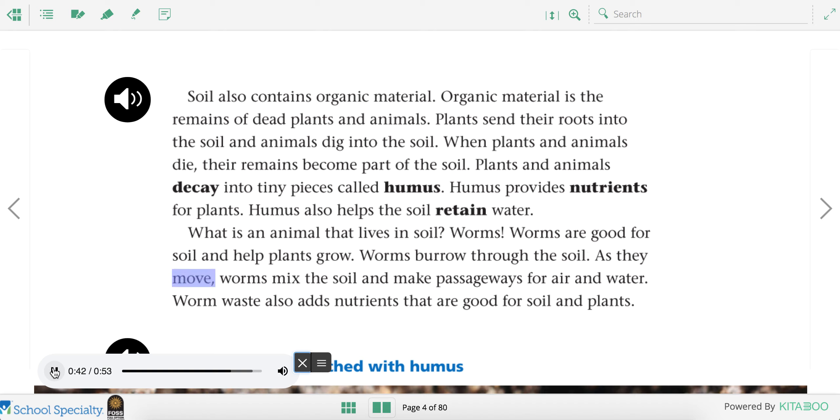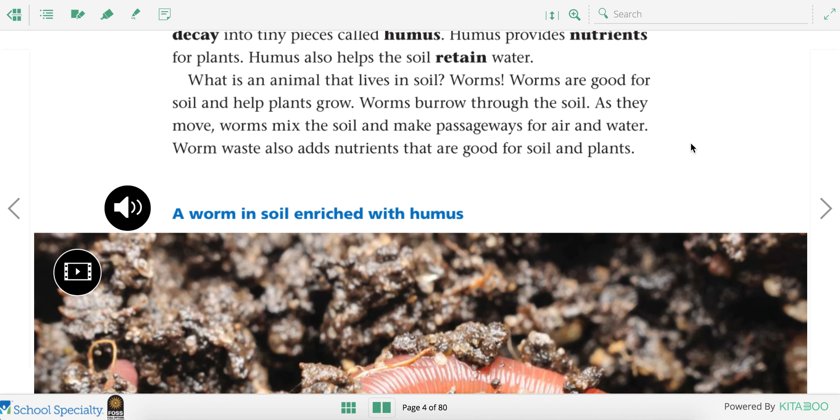As they move, worms mix the soil and make passageways for air and water. Worm waste also adds nutrients that are good for soil and plants. So worms live in soil, but part of the reason they live in soil is not because of the rock, but because of the humus. And humus is tiny parts of plants and animals that have died, that have mixed into the soil or the